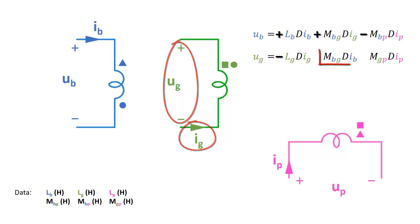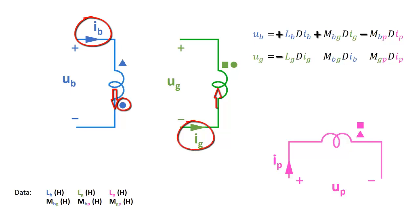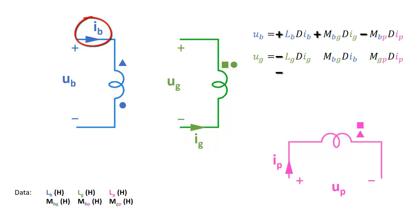The second term is the mutual induction between the green coil and the blue coil. If you look at the blue current, you can see that this current leaves the coil by the circle. Similarly, the green current also leaves the green coil by the circle. So these currents are entering through corresponding terminals. In this case, this second term will have the same sign as the first term, which was negative.